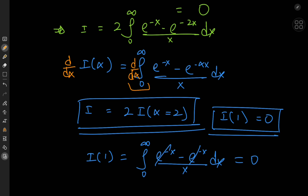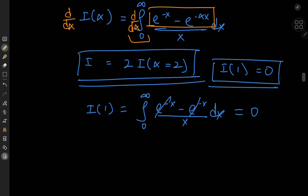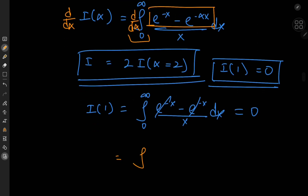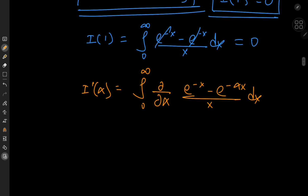I have these two bounded exponential functions being multiplied by a decreasing function, that is 1 over x. So by Dirichlet's test, the integral converges. On switching up the operators, I now have the integral from 0 to infinity of the partial derivative with respect to alpha — by the Leibniz rule — of (e to the negative x minus e to the negative alpha x) over x dx, equal to the derivative of I with respect to alpha.